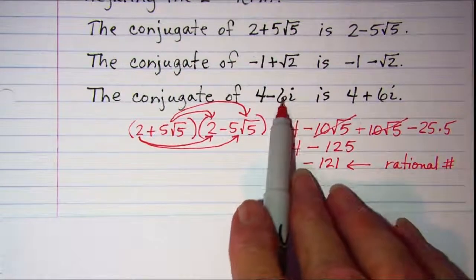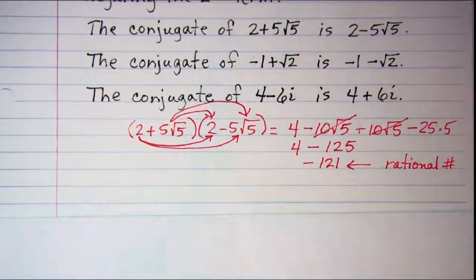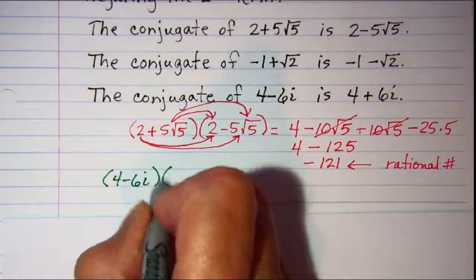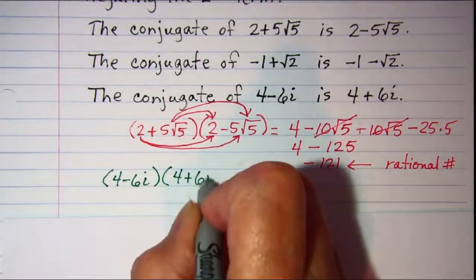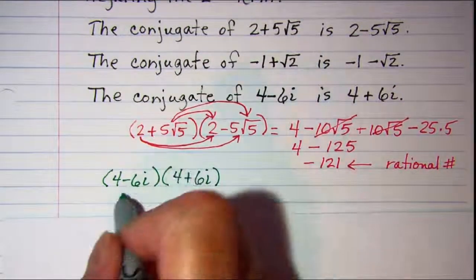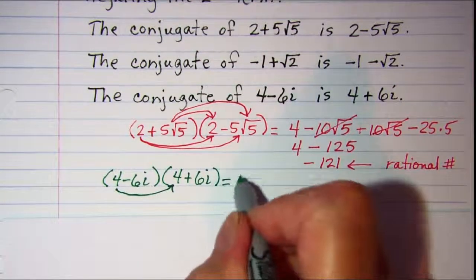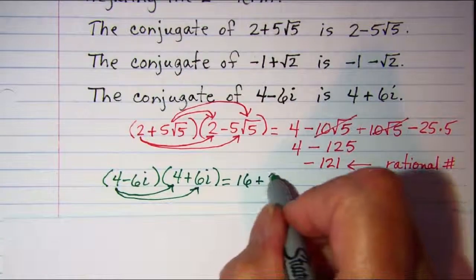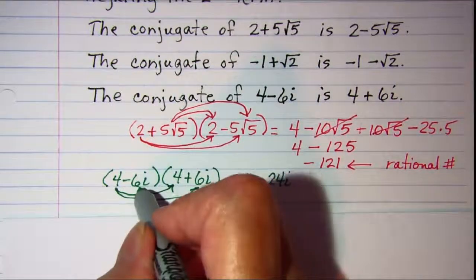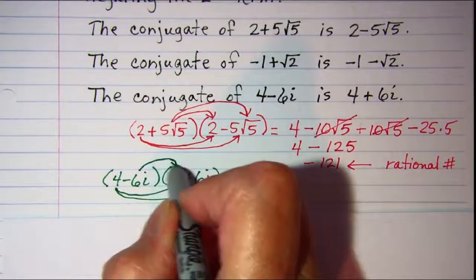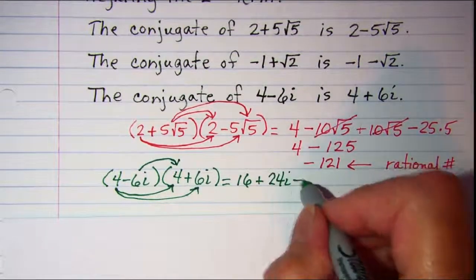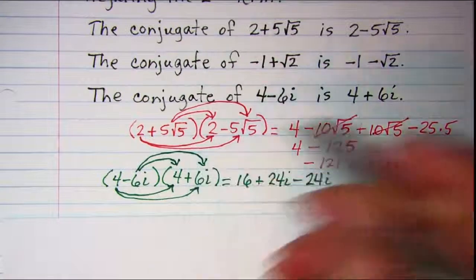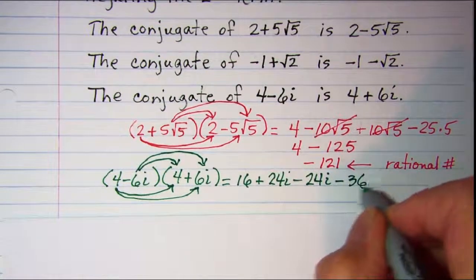Let's just look at this last one too, we'll go ahead and multiply that. 4 minus 6i multiplied by 4 plus 6i. We'll use FOIL again. 4 times 4 is 16 and then 4 times 6i is positive 24i and now I'm ready for the negative 6i to be distributed. Negative 6i times 4 is negative 24i and then negative 6i times positive 6i is negative 36i squared.